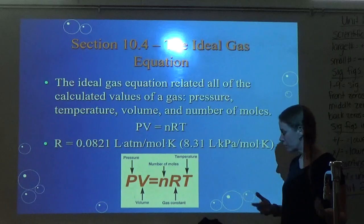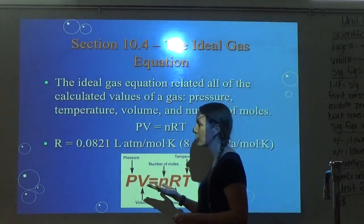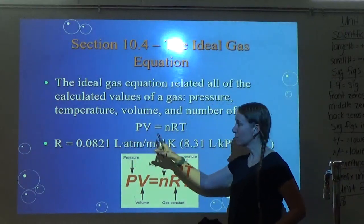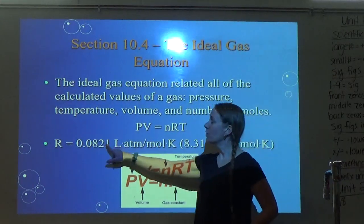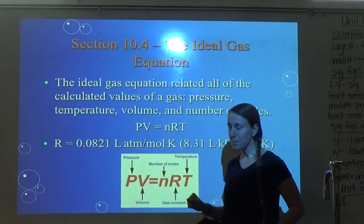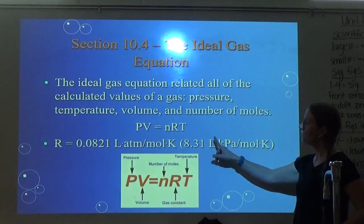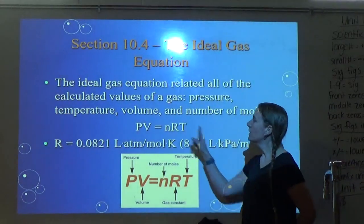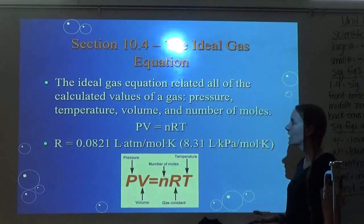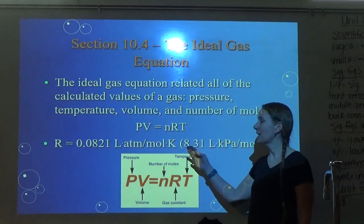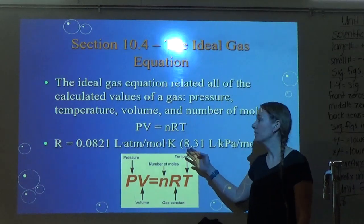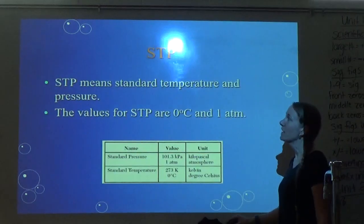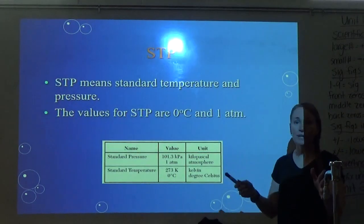For pressure, you have two options. You can use the R value 0.0821 liters times atmospheres over moles times Kelvin — if you use this R value, your pressure must be in atm. Or you can use 8.31 liters times kilopascals over moles times Kelvin — if you use 8.31, your pressure must be in kilopascals. If they give me kilopascals, I use that one to save myself from converting; if they give me atm, I use that one.